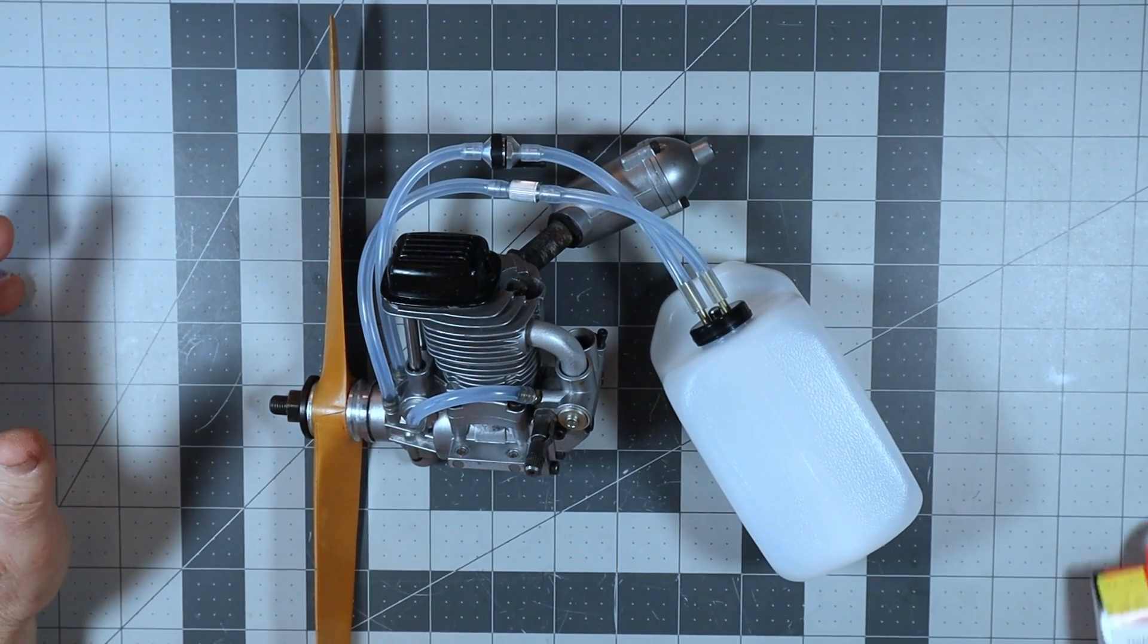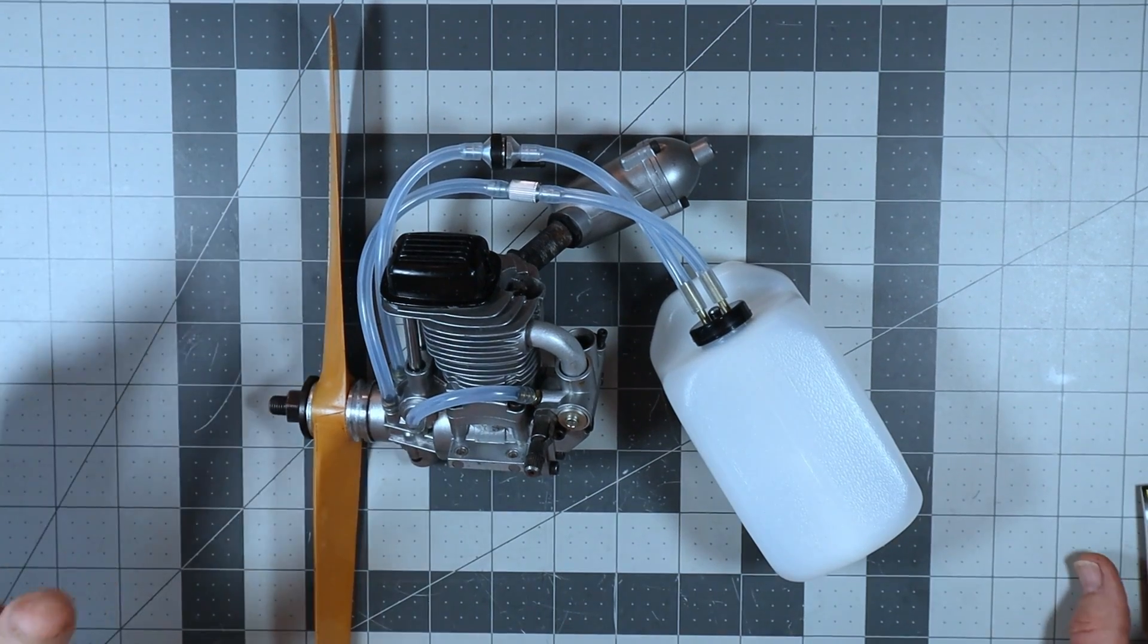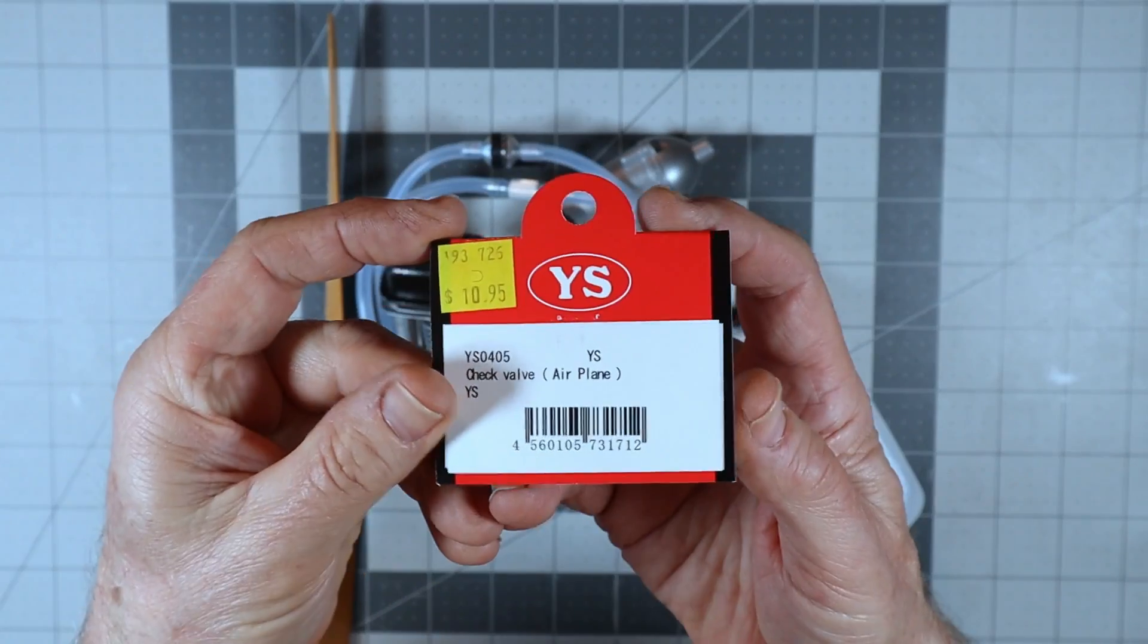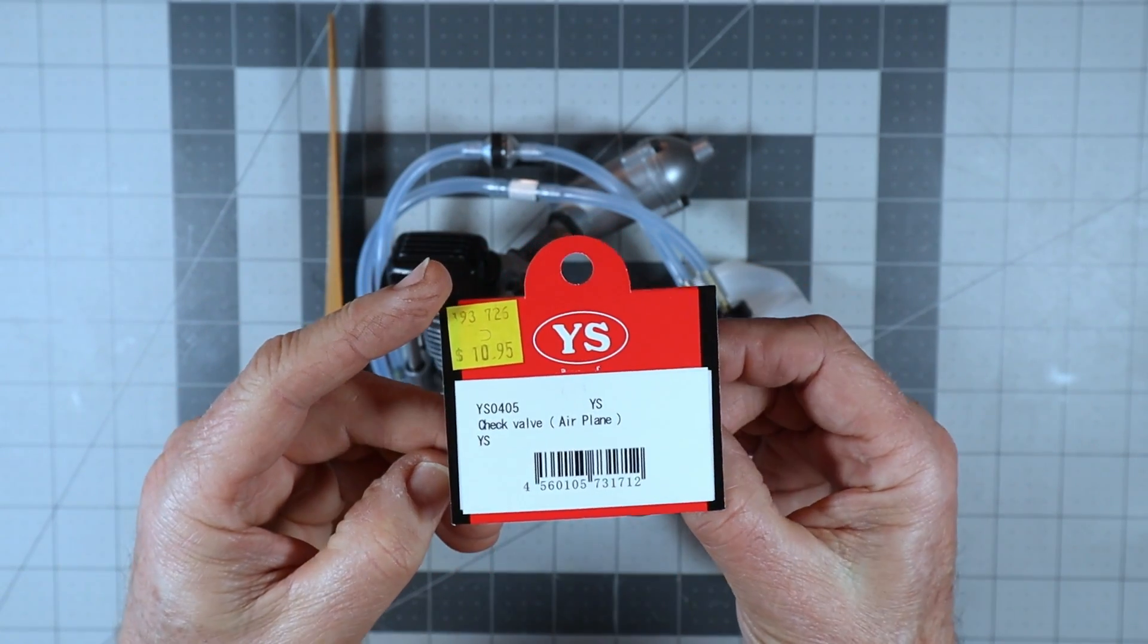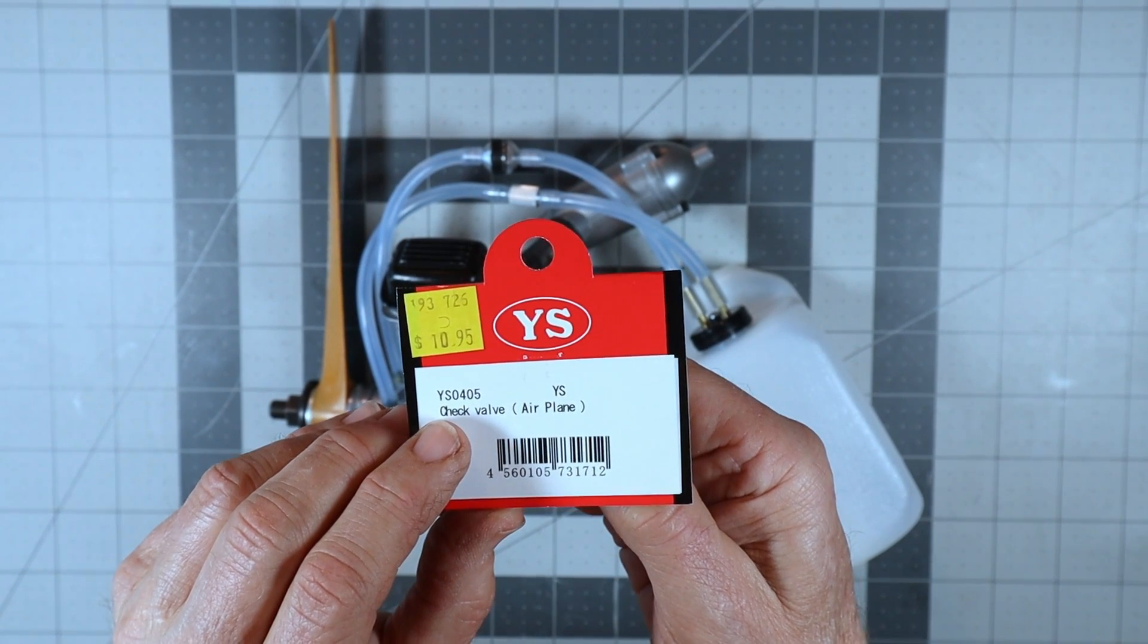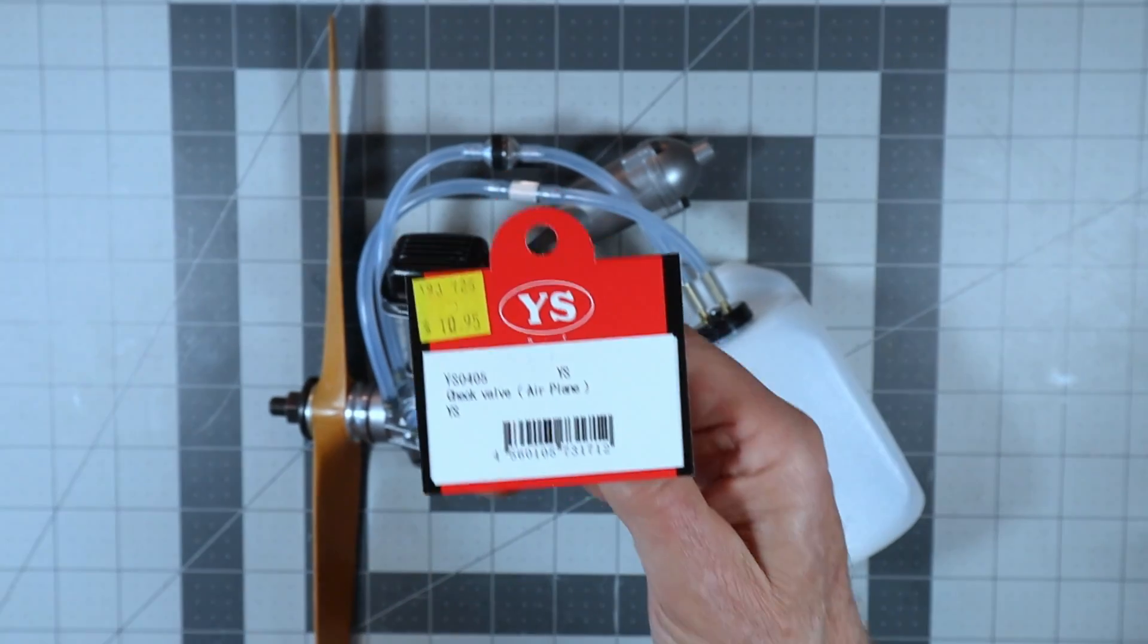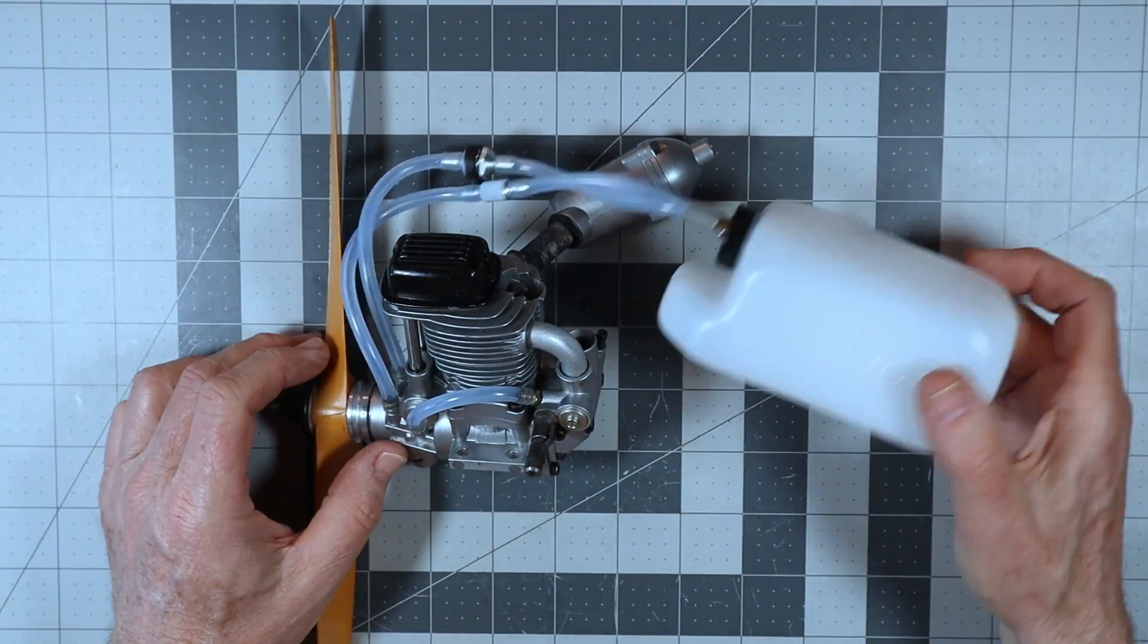What I've got on the bench today is my YS FZ63 engine. And lucky for me, the thing that arrived in the mail today was the check valve that I ordered from Central Hobbies. So those of you that might need a check valve, they have them in stock. The part number is YS0405 check valve for airplane.